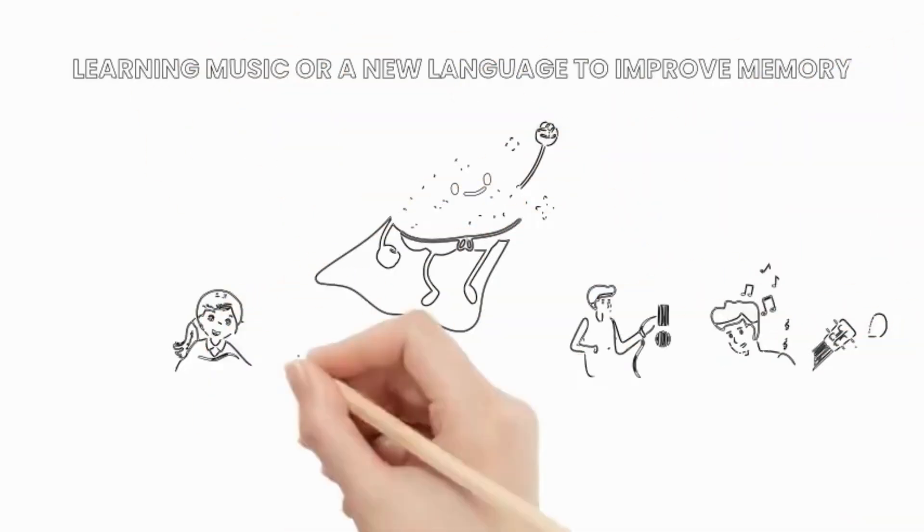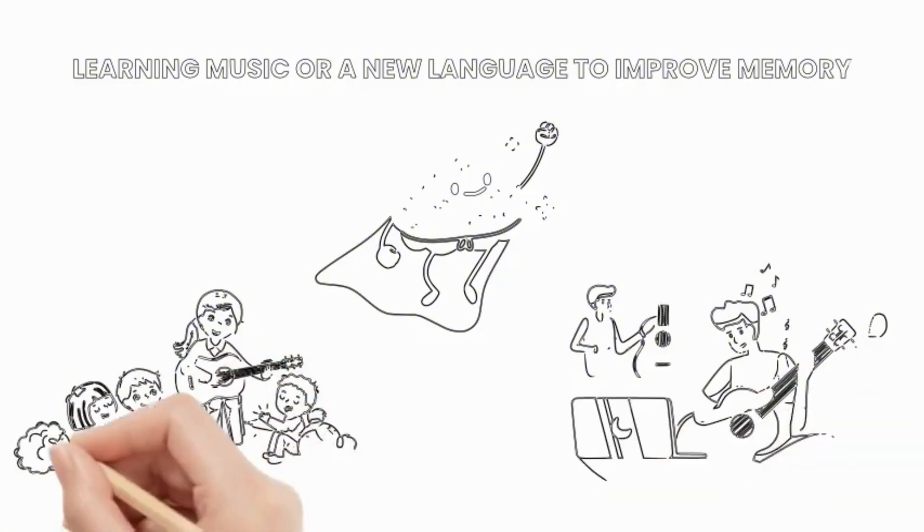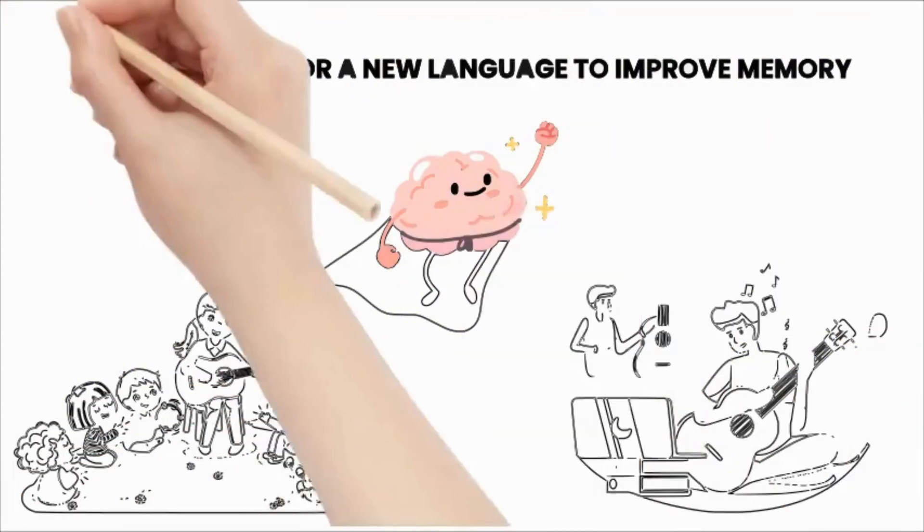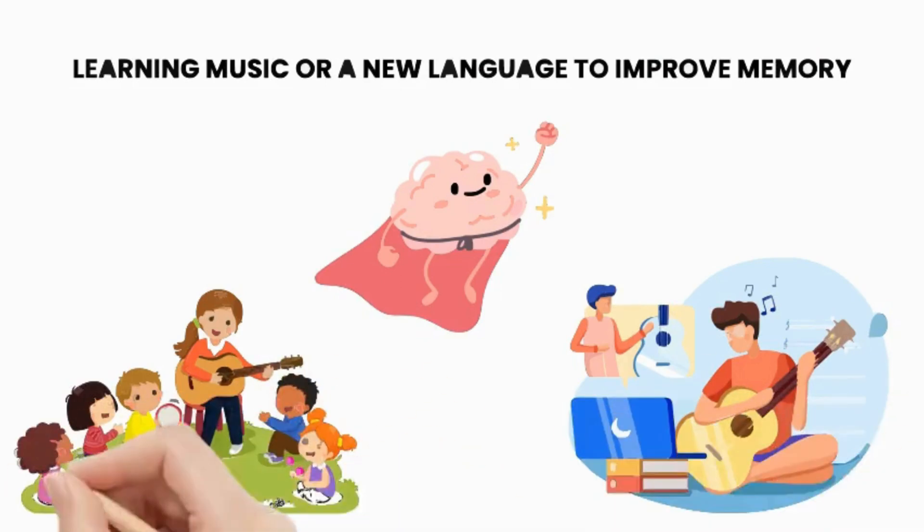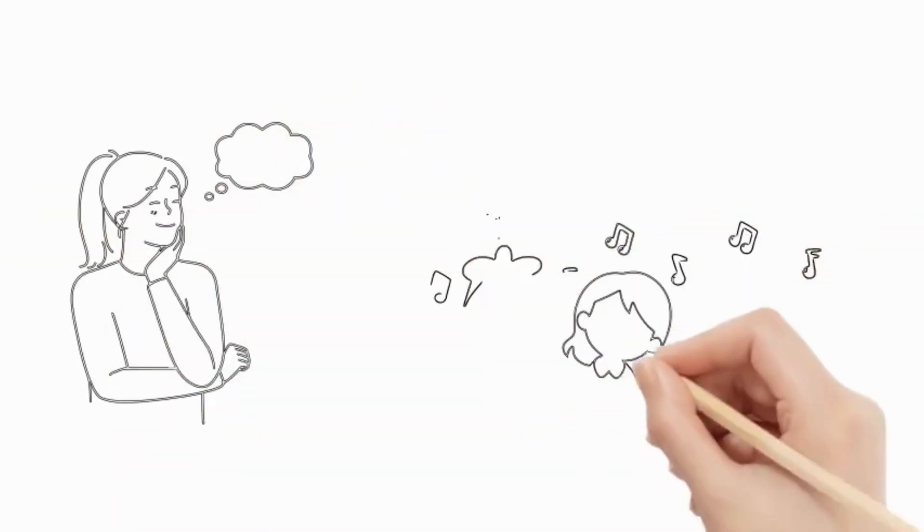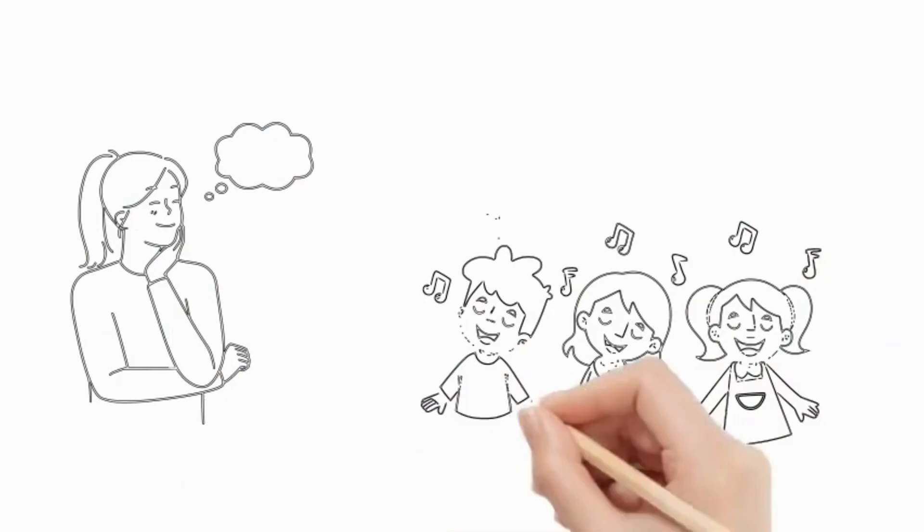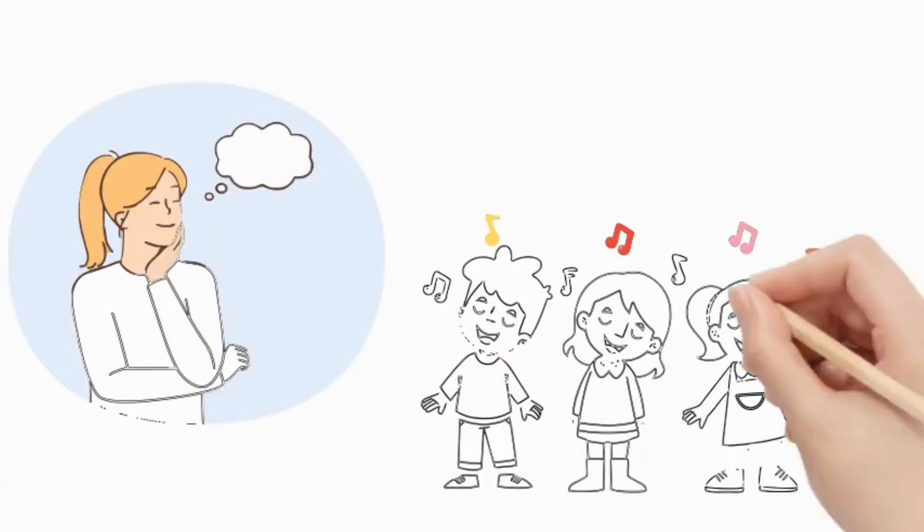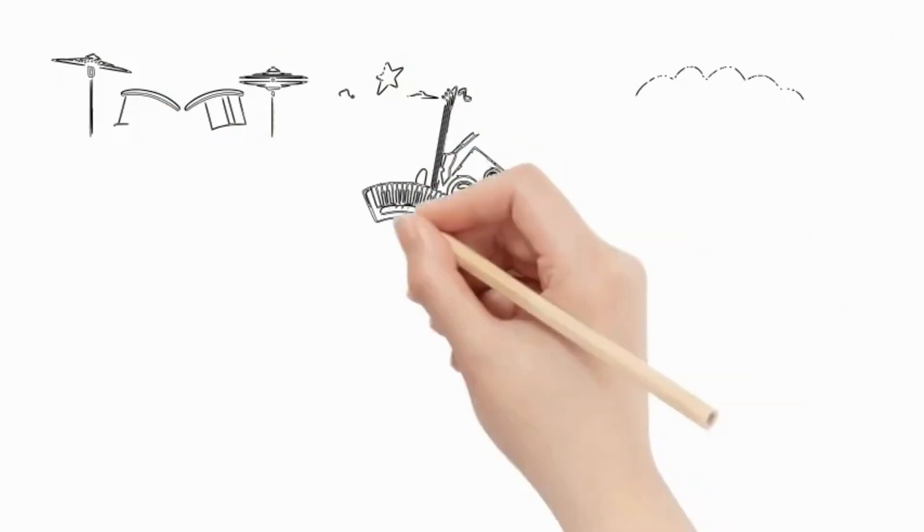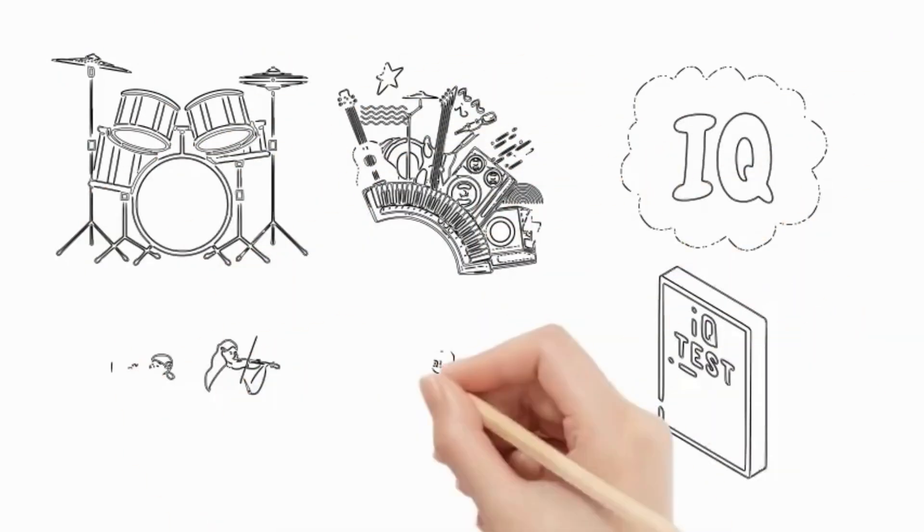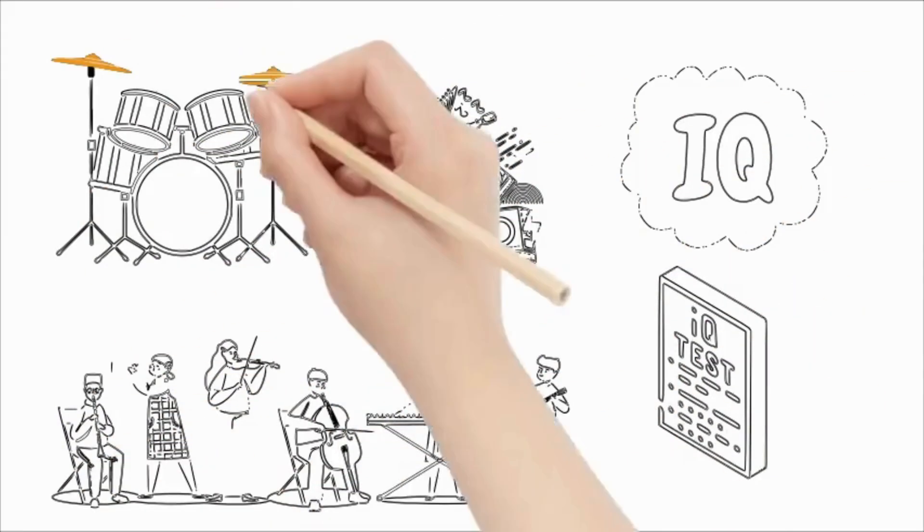Learning music or a new language to improve memory: Music has a profound impact on mental health and brain function. Learning to play a new instrument, singing new songs, or regularly listening to music not only enhances musical skills but also contributes to improving visual and verbal abilities. Studies show that children who learn to play musical instruments tend to have higher IQs compared to their peers who do not.